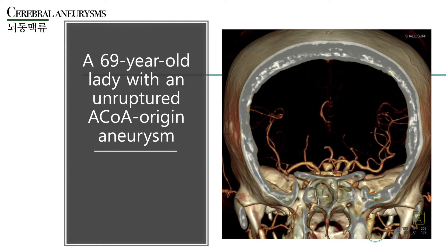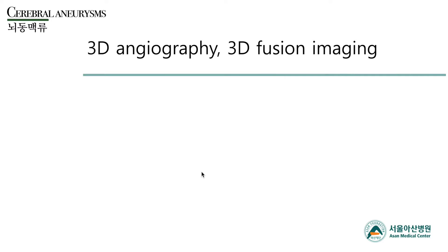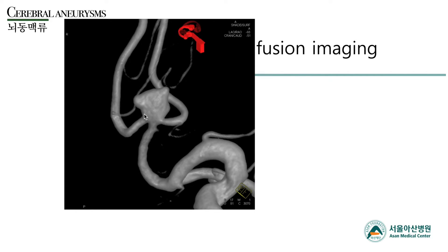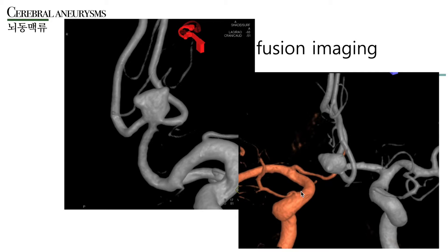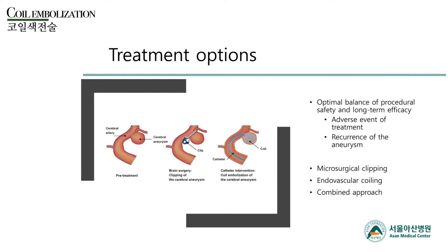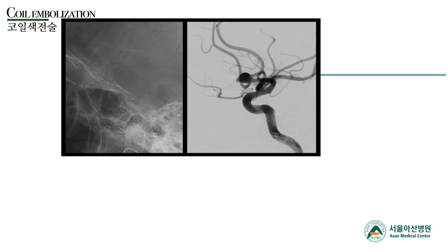For cerebral aneurysms: a 69-year-old lady with an unruptured AComm origin aneurysm, as seen on CT angiography. On TFCA and 3D angiographic imaging, we identified a wide-necked, irregular-shaped, medium-sized aneurysm at the bifurcation of the left ACA. The fusion 3D image of right and left ICA clearly shows the relationship between the two ACAs. There are two treatment options: microsurgical clipping or endovascular coil embolization. When deciding treatment, we balance procedure safety and long-term efficacy. We decided to perform endovascular embolization.